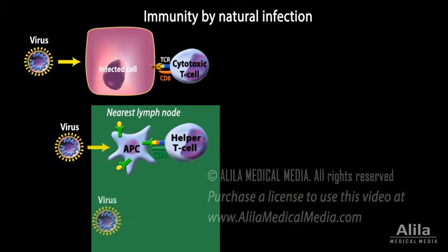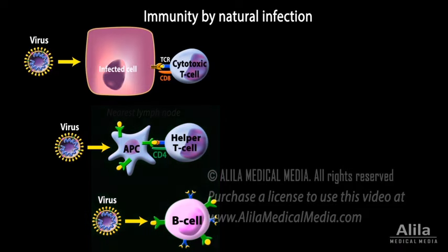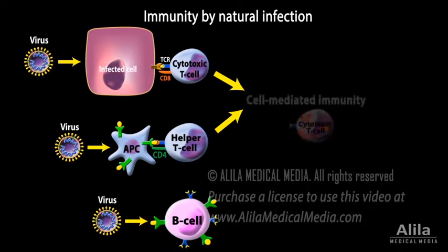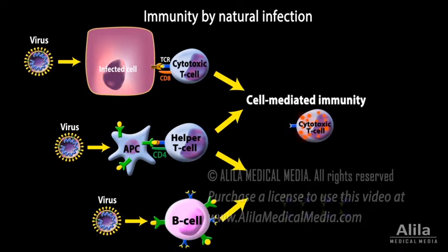Viral particles also activate B cells in lymph nodes. These groups of immune cells work together to mount two types of immunity specific to the viral antigen: cell-mediated immunity and antibody-mediated immunity.